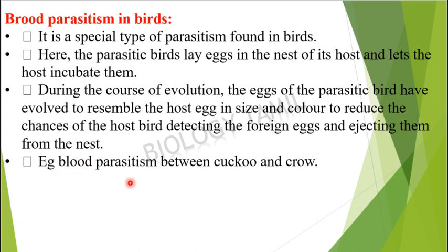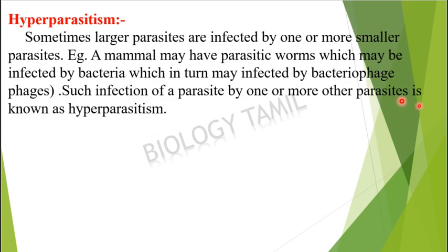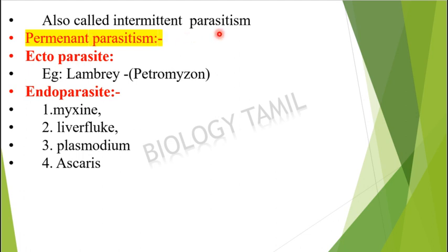An example of brood parasitism is the relationship between cuckoo and crow. Hyperparasitism is when a parasite is itself infected by one or more smaller parasites. For example, a mammal may have parasitic worms, which may be infected by bacteria, which in turn may be infected by bacteriophages. Such infection of a parasite by another parasite is known as hyperparasitism.